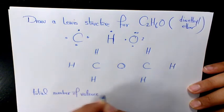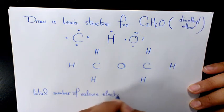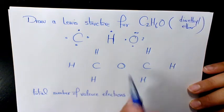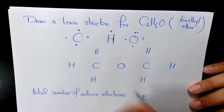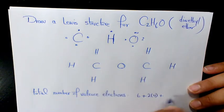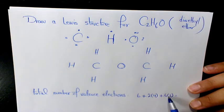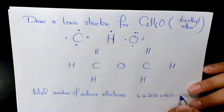Then what we need to do is find out the total number of valence electrons. So we have one oxygen which is six, we have two carbons so two times four, and we have six hydrogens six times one. That's going to be six plus eight plus six, which is going to be 20.